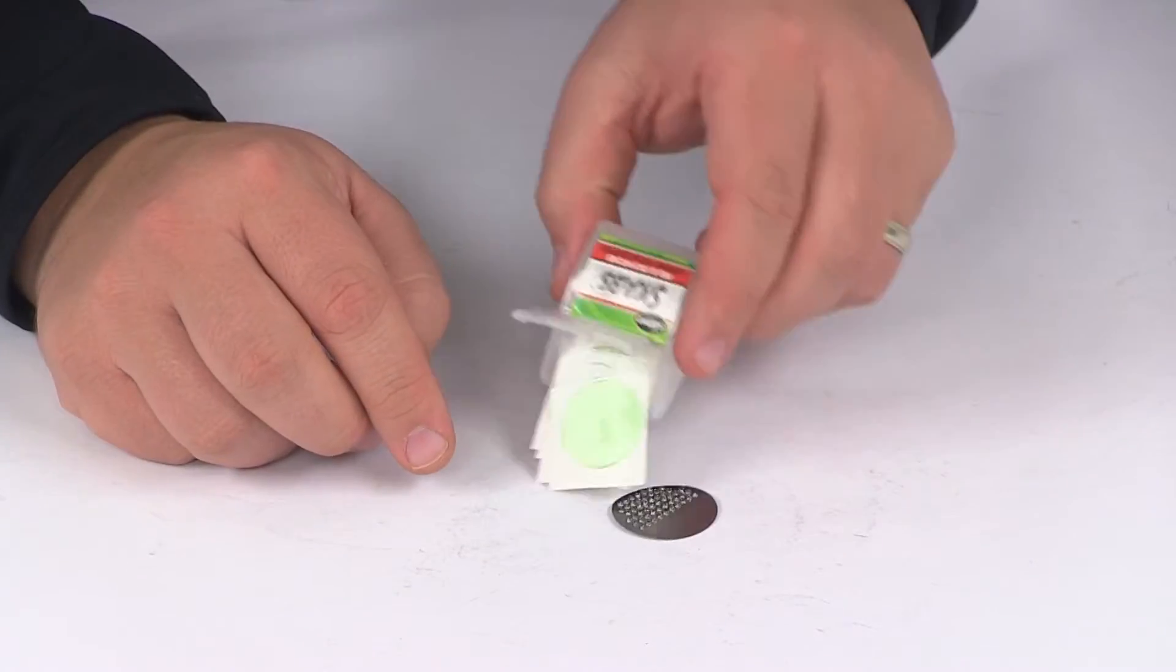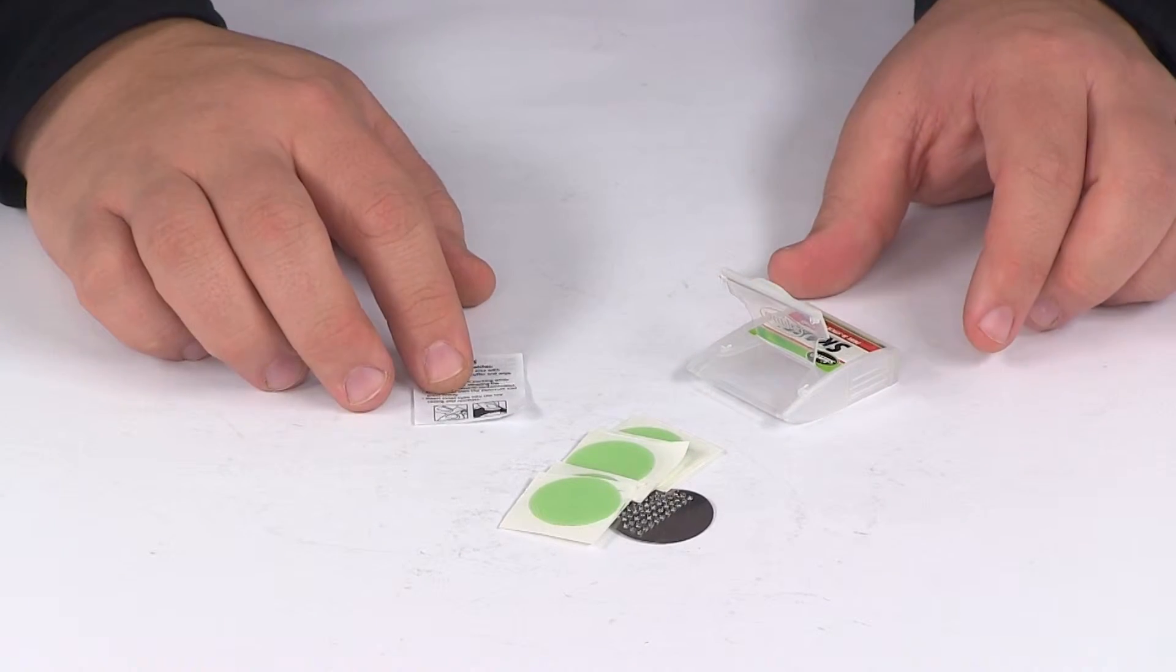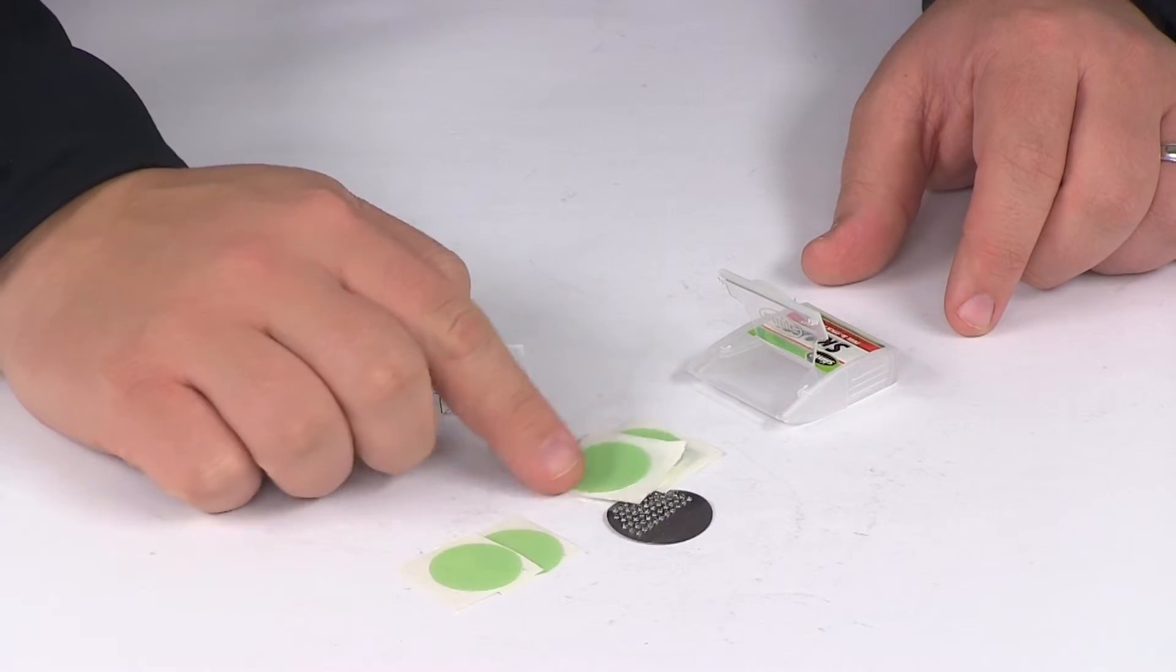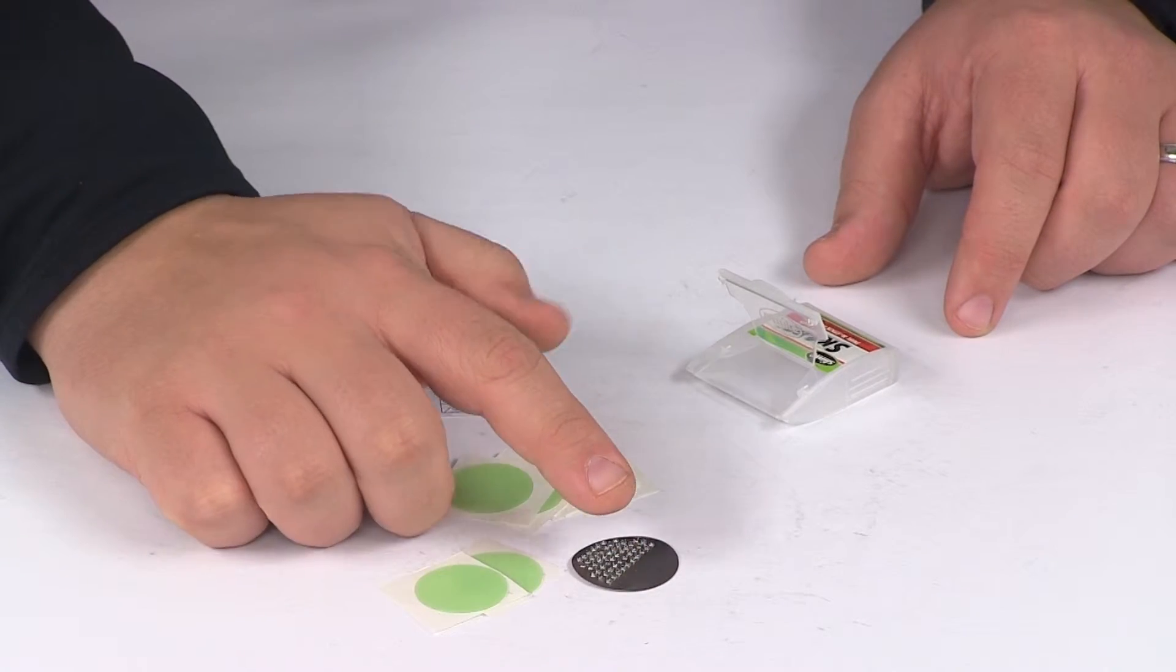I just want to go ahead and show you what all the kit comes with. It's going to come with your instructions, and again it's going to have six pre-glued, one-inch patches, as well as the scuffer.